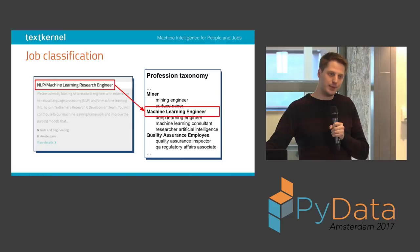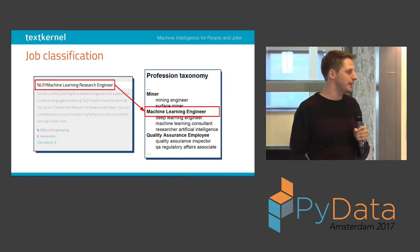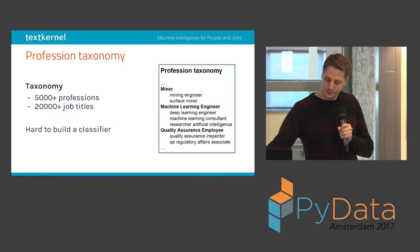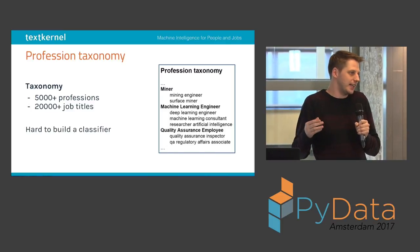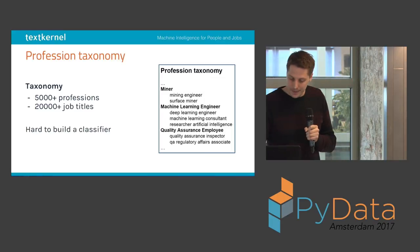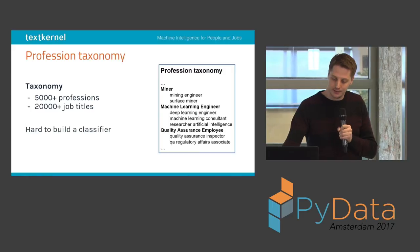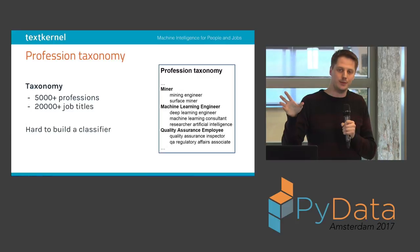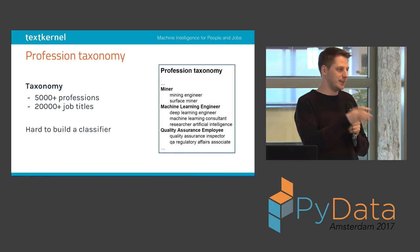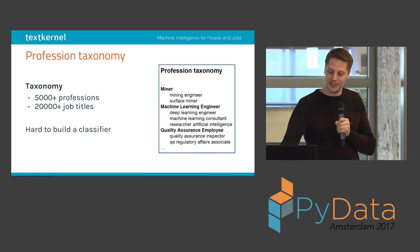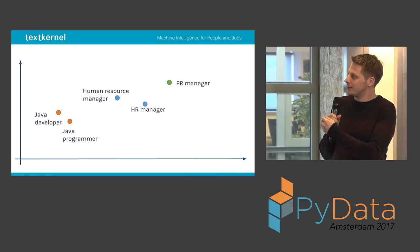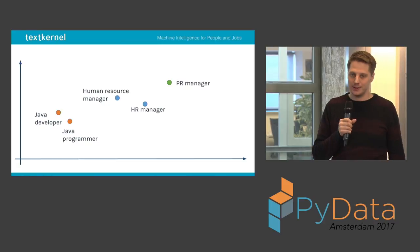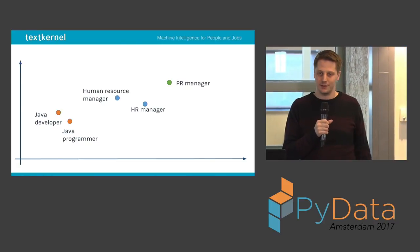When we explain this problem to people, it often sounds a lot like a classification problem — you want to classify which profession this is. However, with 5,000 different professions, it's very hard to build a classifier for that. Also, these professions partly overlap often. So instead of building a classifier, what we want to do is learn the similarity between these job phrases, so that given the job titles we do have, we can map all the variation we find in extracted documents to the most similar job titles in this taxonomy.